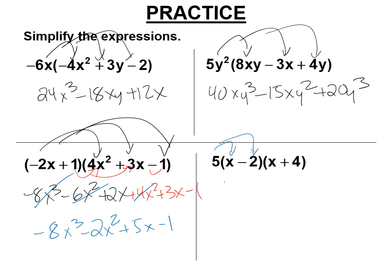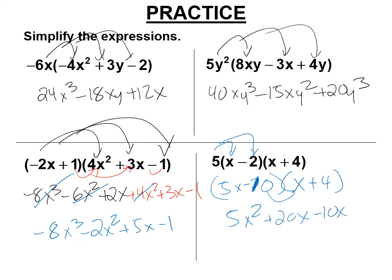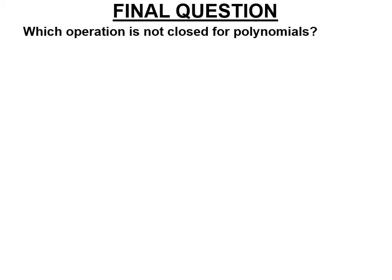These you can do in any order — just make sure you multiply each thing once. 5 times x minus 2 is 5x minus 10, then multiply that times x plus 4: 5x times x is 5x squared, 5x times 4 is 20x, negative 10 times x is negative 10x, negative 10 times 4 is negative 40. Combine like terms: 5x squared plus 10x minus 40. Which operation is not closed for polynomials? Division.